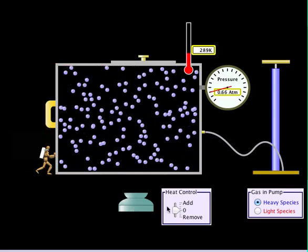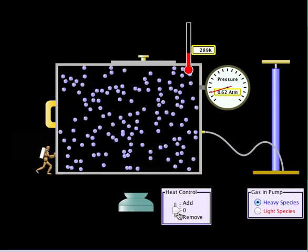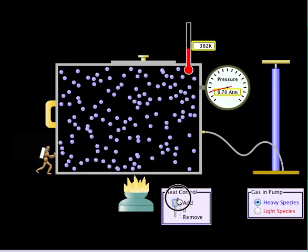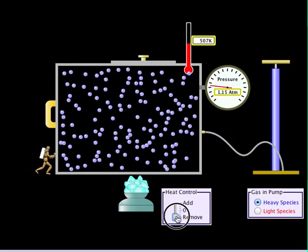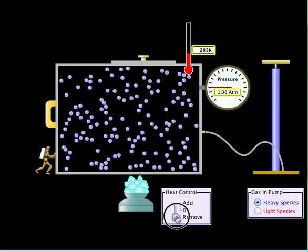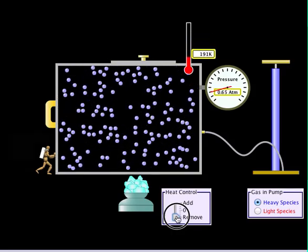The other way that we could add energy to the container is through heat. So we could add heat, which is positive energy added to the container, or we could remove heat, which is negative energy removed from the container.